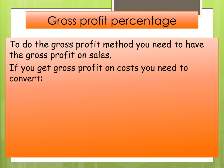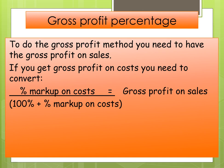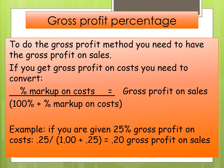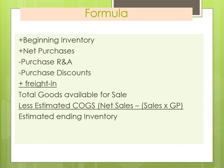For the gross profit percentage: to do the gross profit method, you need to have gross profit on sales. If you're given gross profit on cost, you need to convert it. If it says gross profit on cost or markup based on cost, you've got to convert it using the formula. For example, if you're given 25% gross profit on cost, you would convert it to 20% gross profit on sales. The formula starts with beginning inventory plus net purchases, minus purchase returns and allowances, minus purchase discounts, plus freight, giving you total cost of goods available for sale. Then you estimate cost of goods sold by taking net sales minus net sales times the gross profit rate, and that gives your estimated ending inventory.